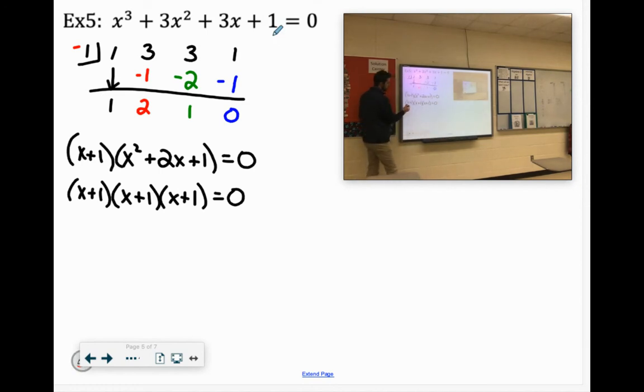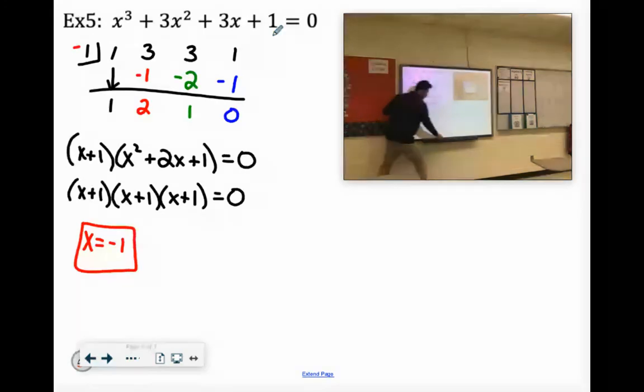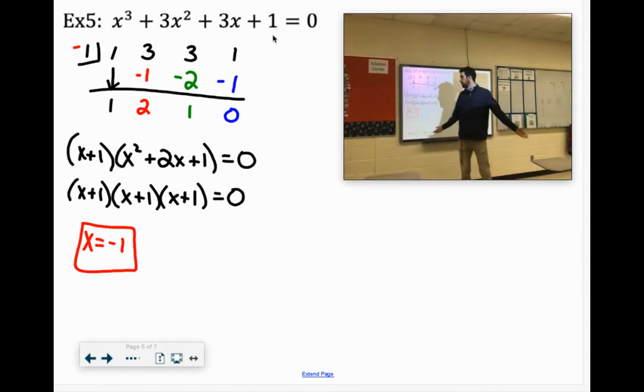All three of these x equals negative one. It has a multiplicity of three. Did it sit as for that? So we'd say,